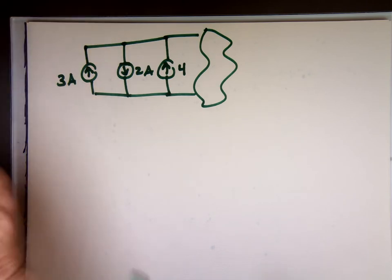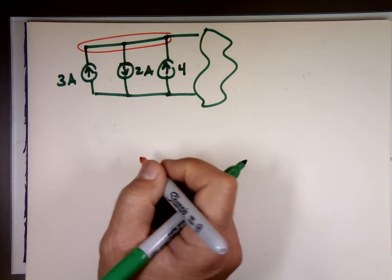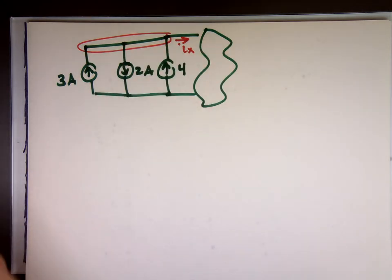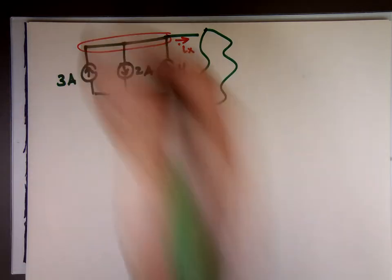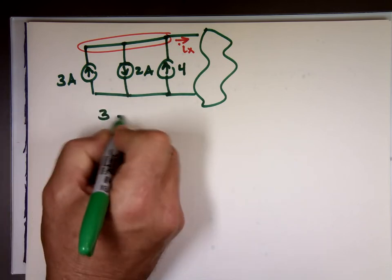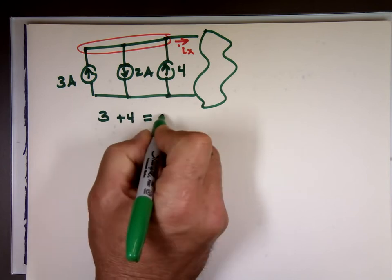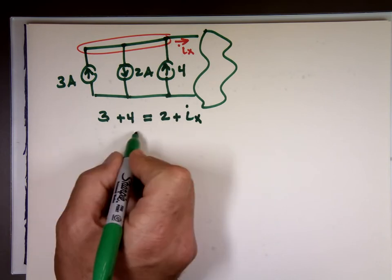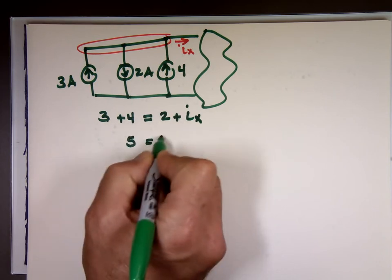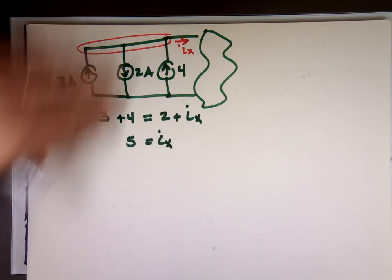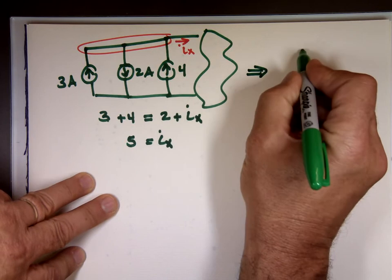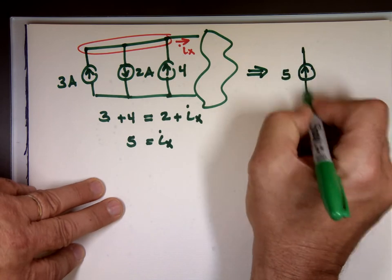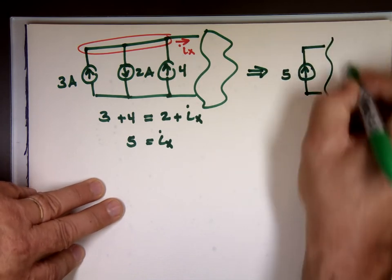If I look at this node right here, I can see all the current, there's a current leaving here called I sub x. All the current entering the node should equal all the current leaving that node. Well, what is going to that node? 3 plus the 4, right? And what's leaving that node? 2 plus I sub x. When you do the math, the 3, the 4, and the 2, what do you have? Isn't that 5? So the equivalent of that will be one source going in with the value of 5 amps.